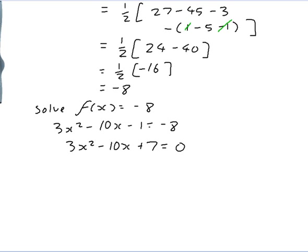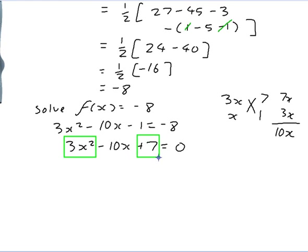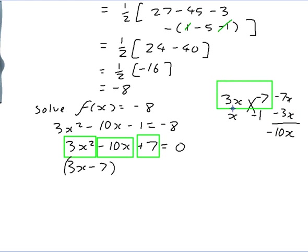We put it equal to zero because that's how you solve quadratic equations. I need two numbers that multiply to give 3x squared — so 3x and x — and two numbers that multiply to give 7, so 7 and 1. Multiplying across the cross-pattern gives 7x and 3x, which add to 10x. Since we need minus 10x, both signs are negative, giving (3x minus 7)(x minus 1) equals 0.